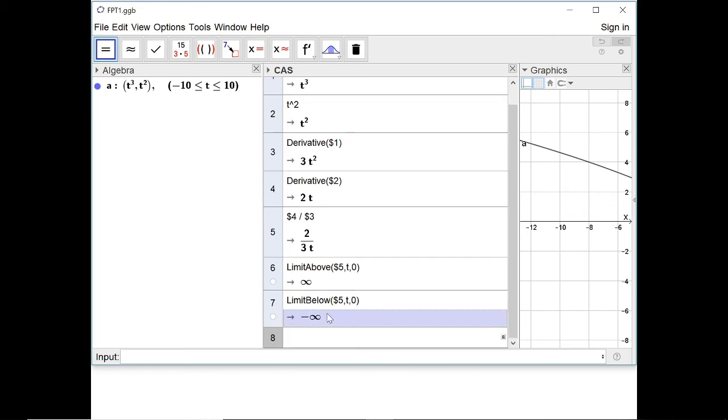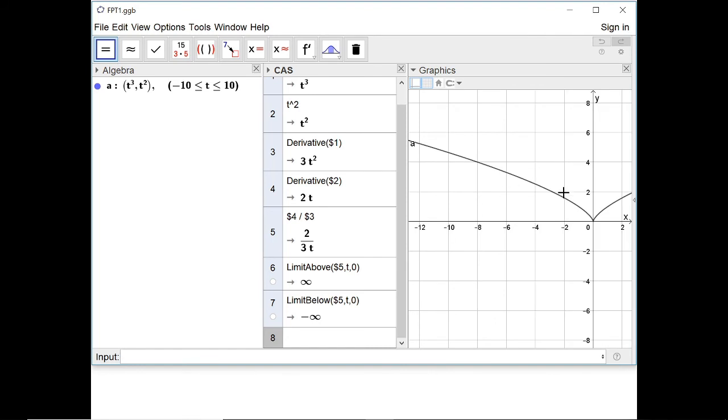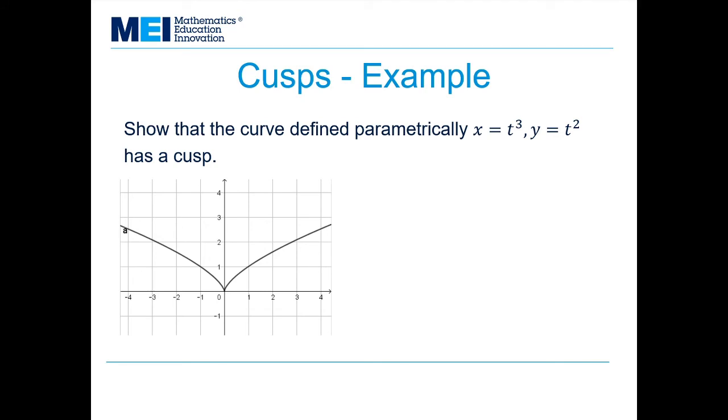Now you might be a little bit concerned that we've got a different gradient. We've got infinity here and we've got minus infinity here. But we're alright because a gradient of infinity is a vertical line and a gradient of minus infinity is also a vertical line. So this is showing that as I approach this cusp from either side the gradient is vertical.